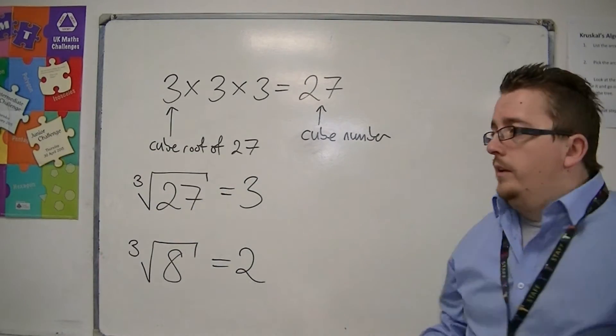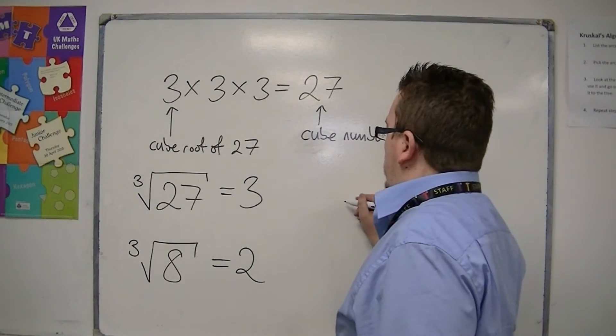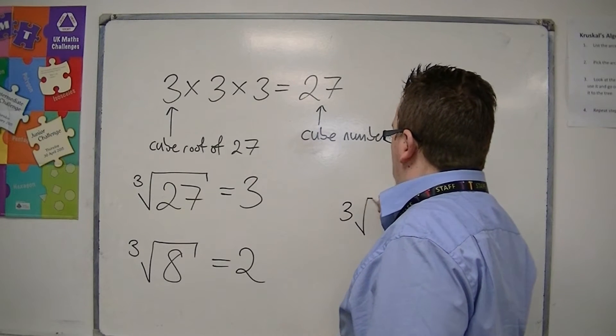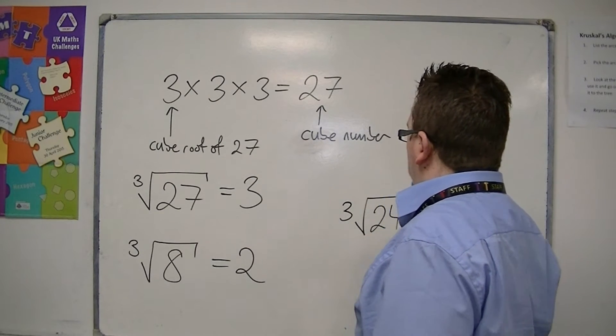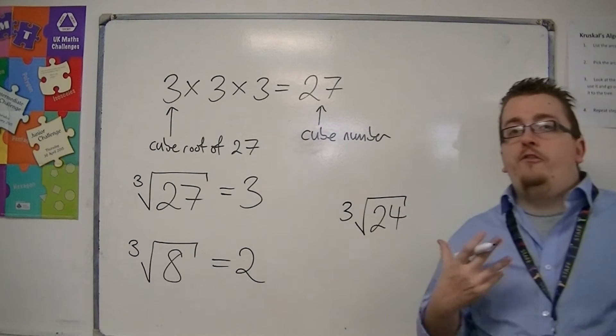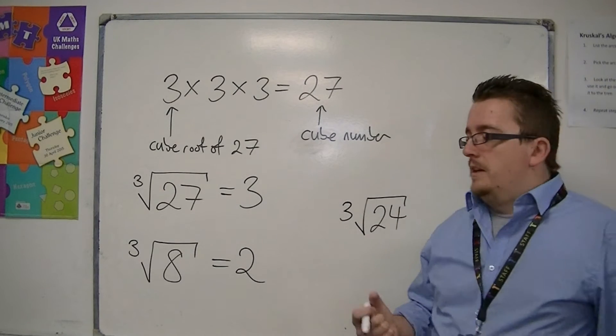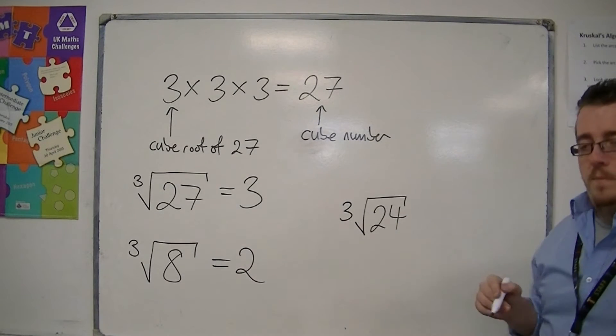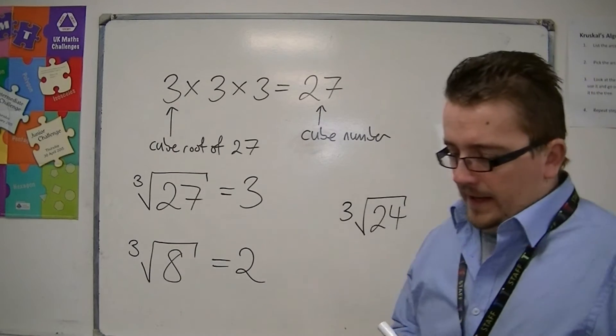Now there are some numbers, so if I said something like what is the cube root of 24, 24 is not a cube number. So the answer to this would be a decimal, so that would be on a calculator paper.